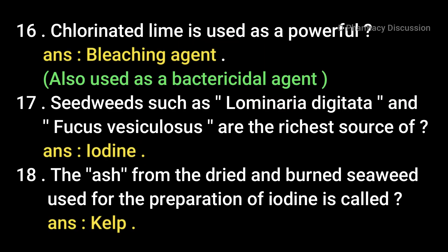Chlorinated lime is used as a powerful bleaching agent and also as a bactericidal agent. Seaweeds such as Laminaria digitata and Fucus vesiculosus are the richest source of iodine. The ash from dried and burnt seaweed used for the preparation of iodine is called kelp.